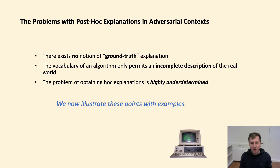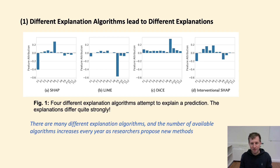From a computer science perspective, the problem with algorithmic explanations is that they are highly underdetermined. This means that for every given prediction, there are many different equally plausible explanations and explanation algorithms. On the next slides, we illustrate the problems with post-hoc explanation algorithms with a number of different examples. In this discussion, it is always important to keep in mind that we are concerned with an adversarial context where the explanations are provided by an adversary who will try to provide explanations that align with his incentives. One problem is that there are many different equally plausible explanation algorithms, and in practice these algorithms lead to different explanations even for quite simple problems.